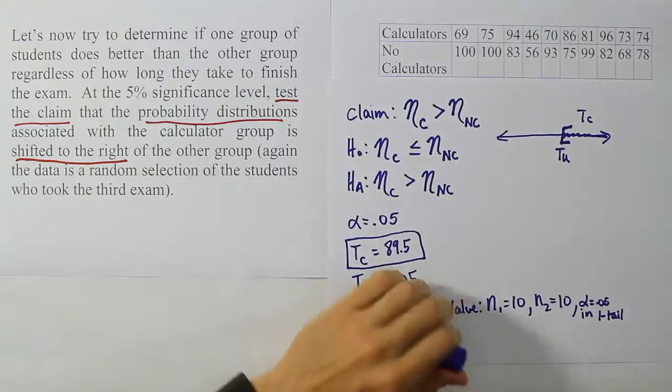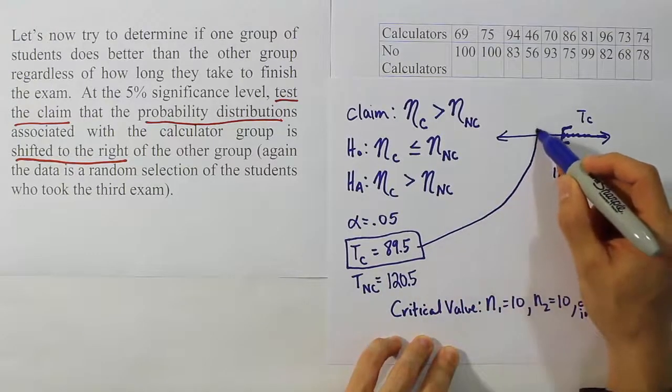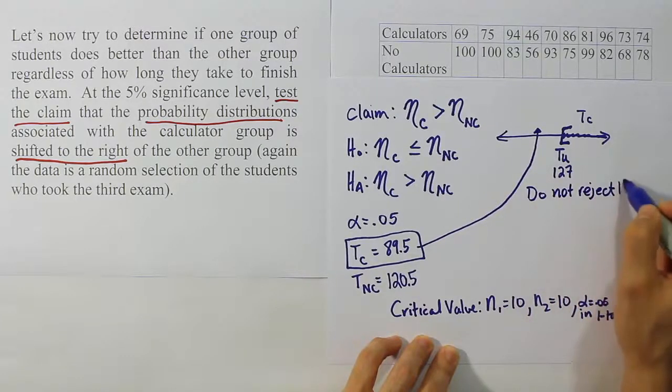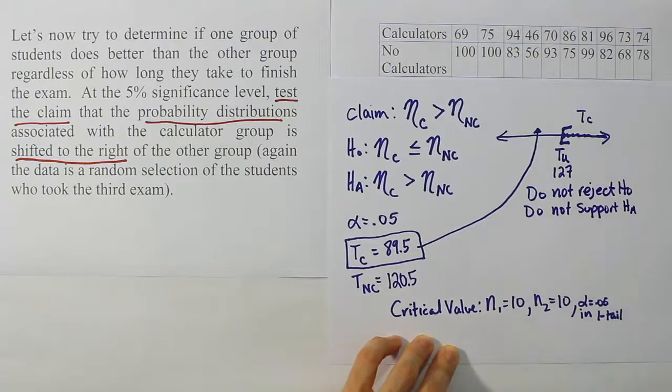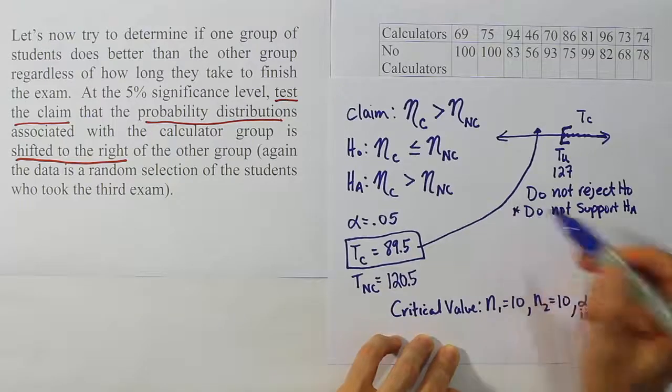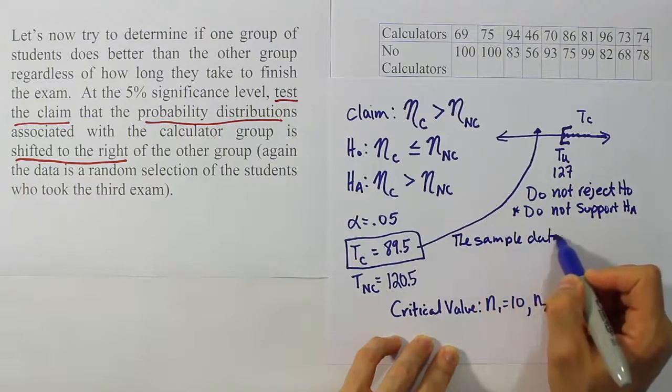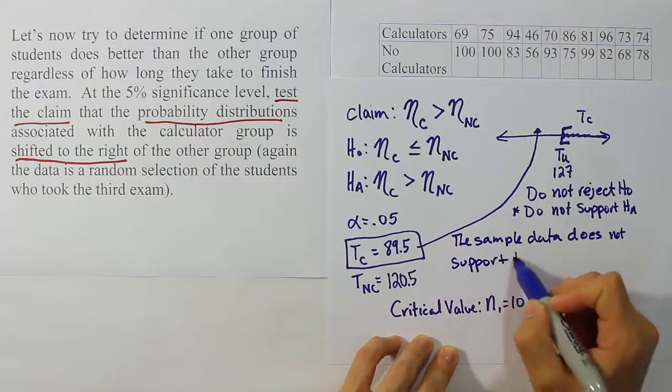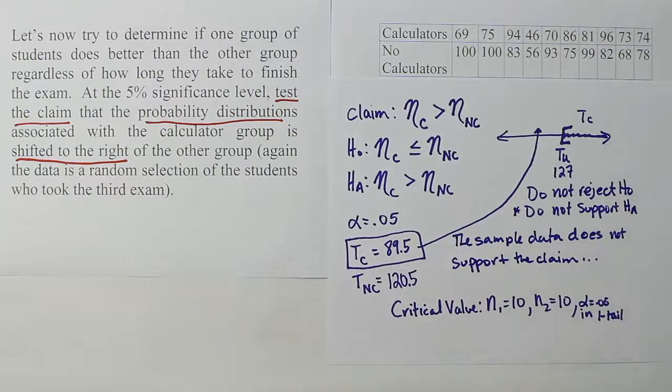Okay, so I'm on the Wilcoxon rank sum table, and I'm looking for 0.05 and one tail. That's this bottom box down here. And then I'm going to be looking for N₁ is 10 and N₂ is 10. So N₁ is 10, N₂ is 10. I get the values 83 and 127 for T lower and T upper. So it's 83 and 127. Okay, so our T upper value turns out to be 127. So now we're going to compare that against our test stat, which as we see falls short of the rejection region. So we're going to say do not reject H₀ and therefore do not support Hₐ. And once you see that, you notice that our claim is the same as Hₐ. So we're going to use this wording. The sample data does not support the claim. And of course the claim here is that the calculator group has a higher median grade than the non-calculator group. It seems to be that based on this sample, that isn't true.